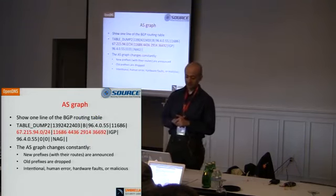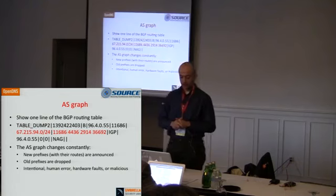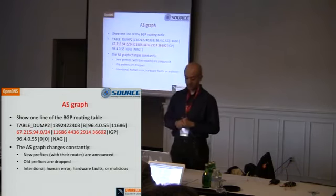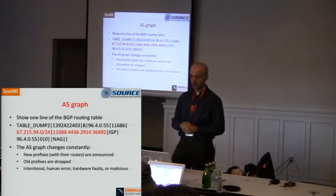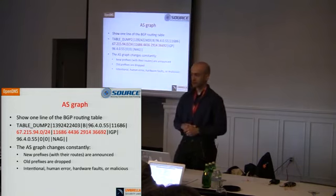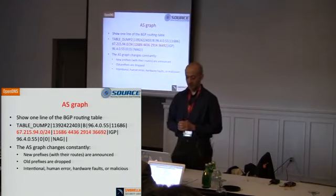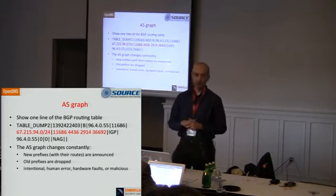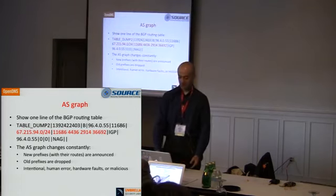To build the ASN graph, look at the BGP routing table — the RIB. You have a prefix like a /24 and an AS path. From this you know that the prefix belongs to the last ASN in the path, for example 36692. You can build a mapping between IPs to prefixes to ASNs, which is what tools like MaxMind, UIP, and others do. Keep in mind the AS graph changes constantly — prefixes are announced and dropped on a constant basis, sometimes due to intentional mistakes, errors, or malicious activity.